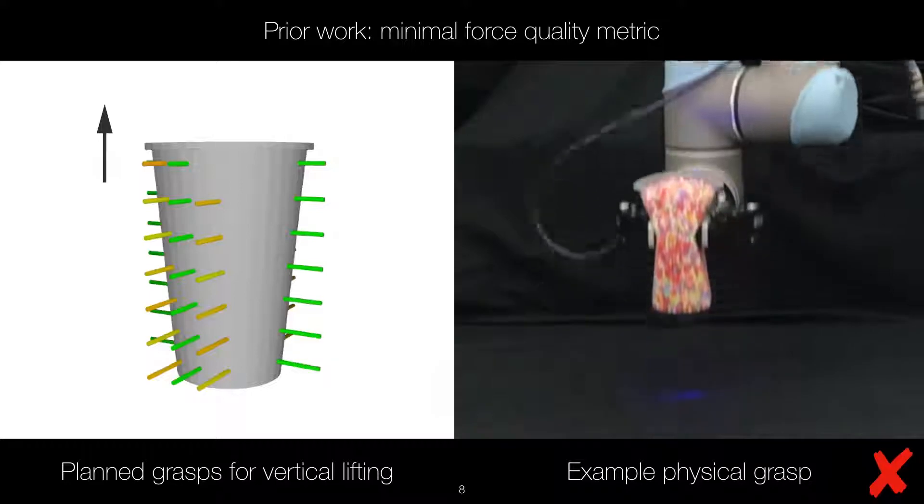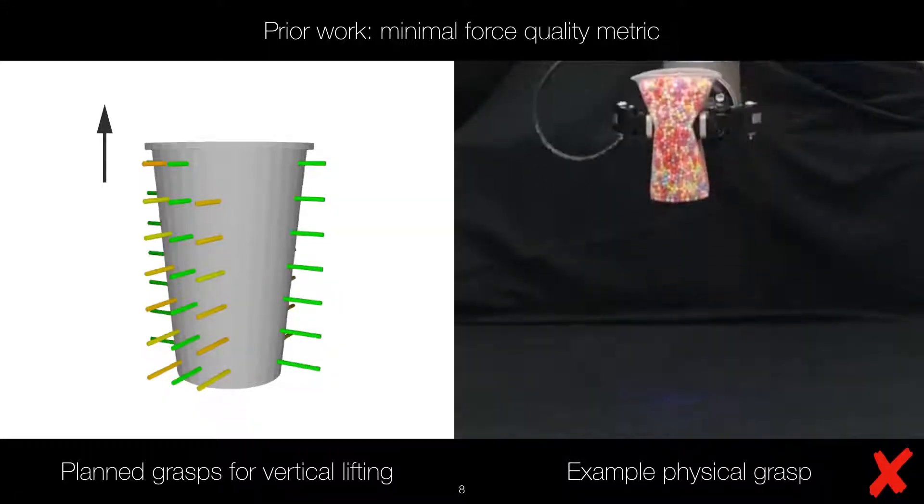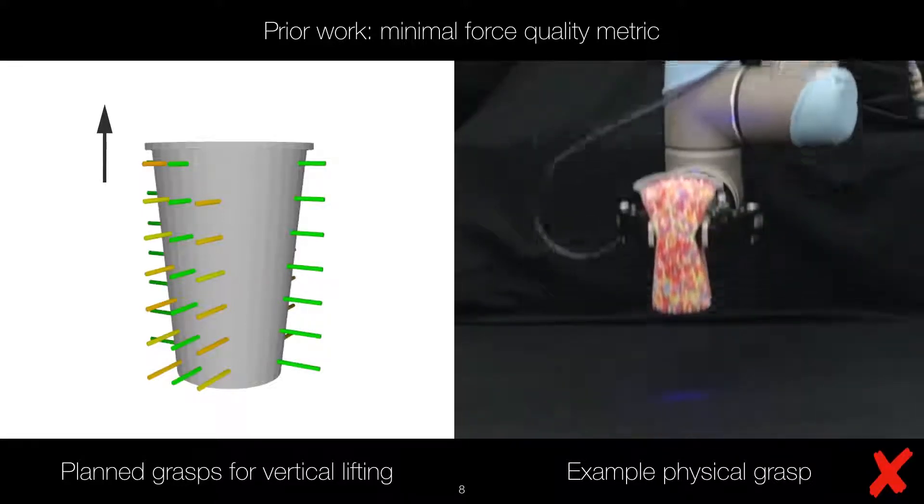The left figure shows the planned grasps with the minimum force metric for a vertical lifting task. The green axes indicate low grasp force. On the right we show an example physical grasp, which failed due to content spillage and object plastic deformation.